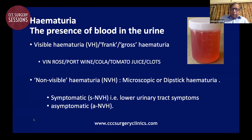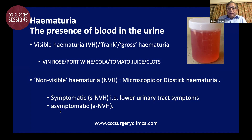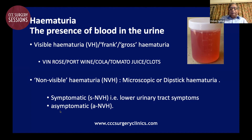Hematuria is classified as visible hematuria and non-visible hematuria. Visible hematuria is also known as frank hematuria or rosé hematuria, and it has been colorfully described in various colors — the color of wine, vin rosé, which is light red or light pink, port wine color, cola color, or tomato juice color. There may or may not be clots, but visible or gross hematuria can be extremely alarming to the patient, who seeks instant help.